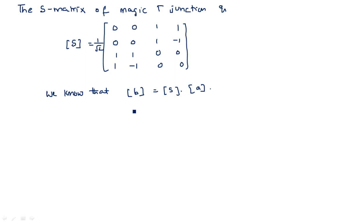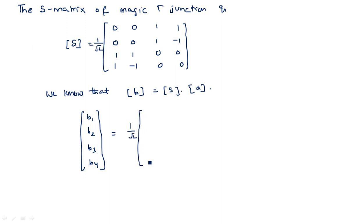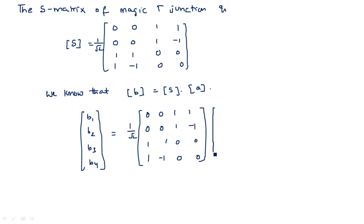Since the Magic-T has four ports, the size of [b] is 4×1 and [a] is also 4×1. So [b1; b2; b3; b4] = (1/√2) × [0 0 1 1; 0 0 1 -1; 1 1 0 0; 1 -1 0 0] × [a1; a2; a3; a4]. Here a represents the incident wave and b represents the reflected wave.